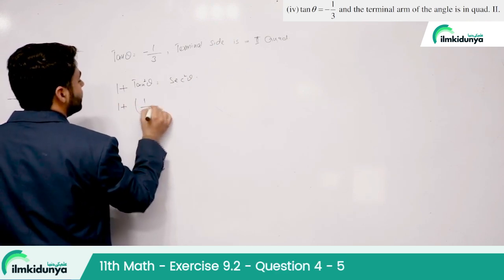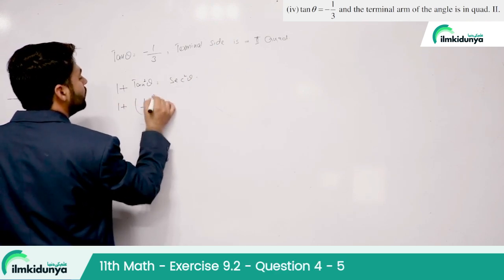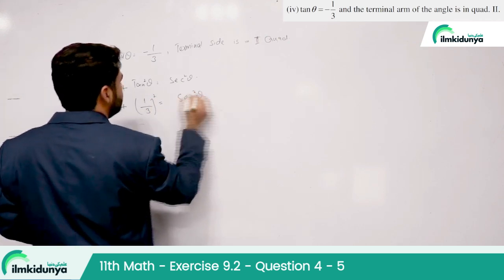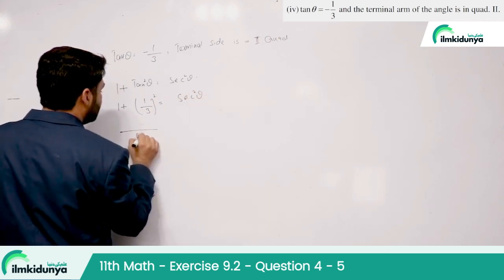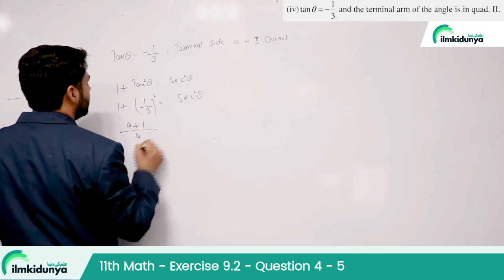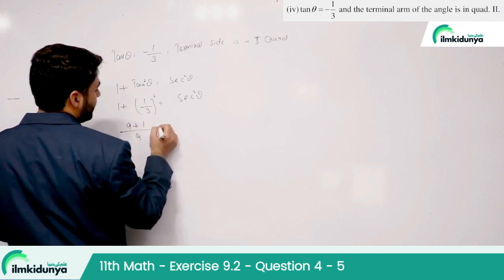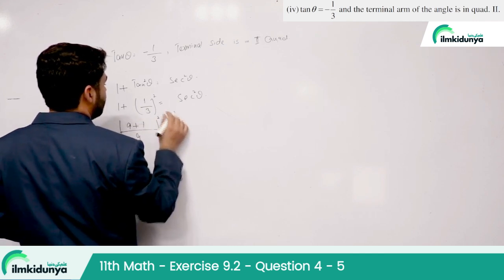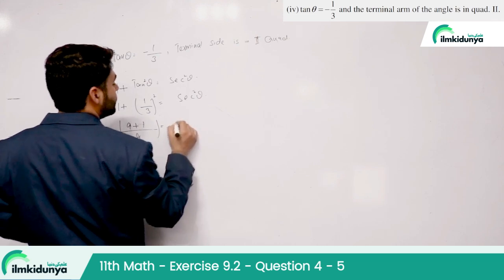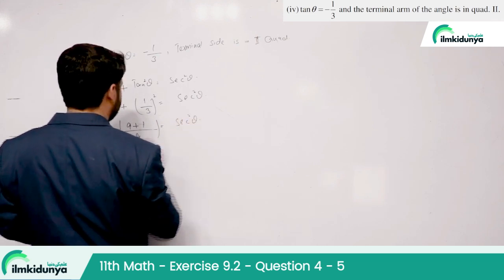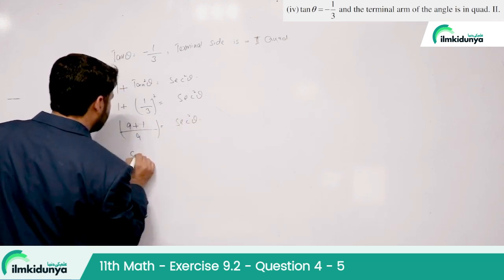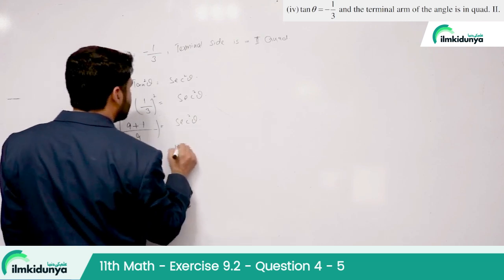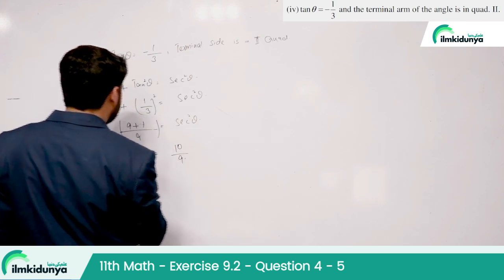1 + 1/9 = sec²θ. That is 9/9 + 1/9 = 10/9. So secant²θ = 10/9.